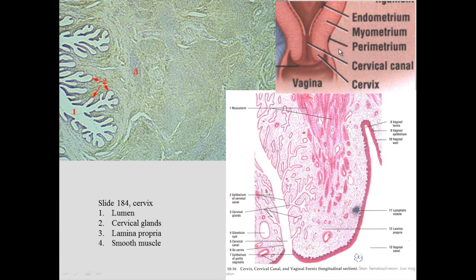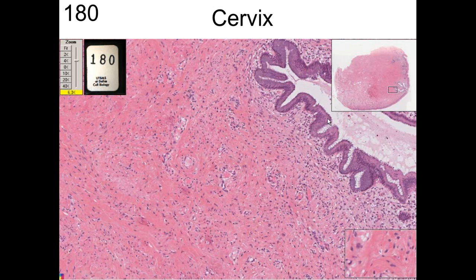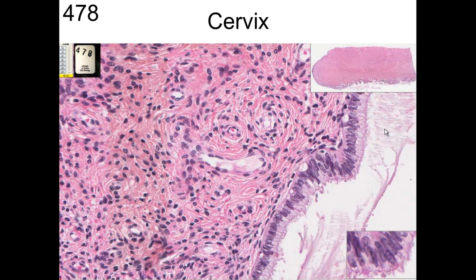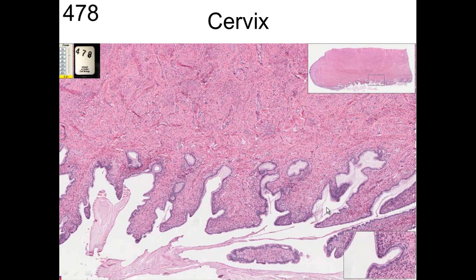At the cervix, cervical mucus is secreted by cervical glands in the center. On the outside — the ectocervix — you have stratified squamous epithelium, but you have simple columnar epithelium inside the cervix. You can see the cervical mucus and the simple columnar secretory cells — these are not ciliated cells, just secretory cells — with little projections, and finally cervical mucus making its way to the outside.